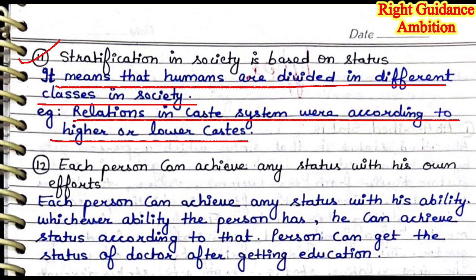Eleventh point: stratification in society is based on status. It means that humans are divided into different classes in society. People divide into different classes and get different statuses — like lower class, middle class, and upper class. According to those classes, they have status and they also play roles in society. For example, in the caste system, relations were according to higher or lower caste. Higher caste people were treated differently. We can say that society has been stratified and division has been created by status.